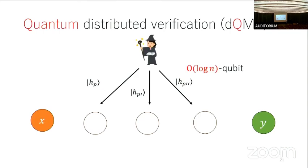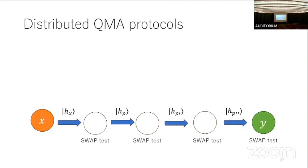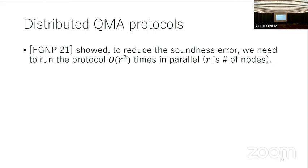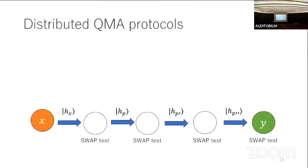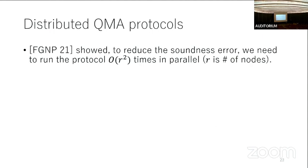In the quantum setting, we can exploit the power of quantum fingerprinting. A quantum prover distributes a quantum fingerprint to intermediate nodes, which is O(log n) qubits. The nodes can conduct the swap test over two adjacent quantum proofs. This protocol has perfect completeness, but it's hard to analyze soundness. Fraigniaud et al. showed that r-squared parallel repetitions are sufficient to achieve high soundness, where r is the number of nodes — the length of the path on a line network.